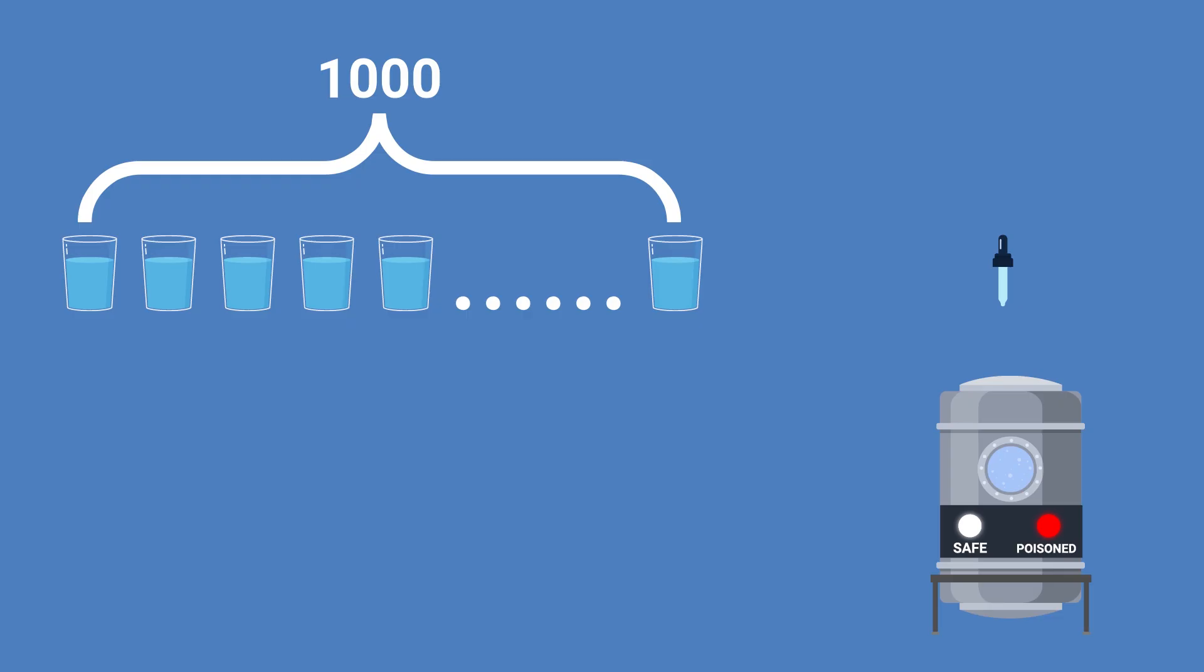So the goal is to find the method that uses the least number of tests on average. Now the simplest method, and clearly not the one we're looking for, is that we test each drink individually. Thus it'll take a thousand tests before we know exactly which drinks are the poisoned ones.